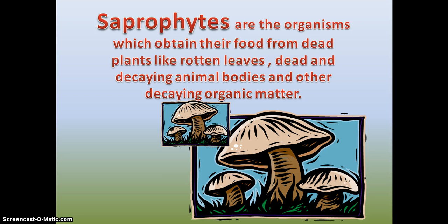Sapro means rotten. A saprophytic organism draws its food from rotting wood of dead and decaying trees, rotten leaves, dead animals, and household waste.